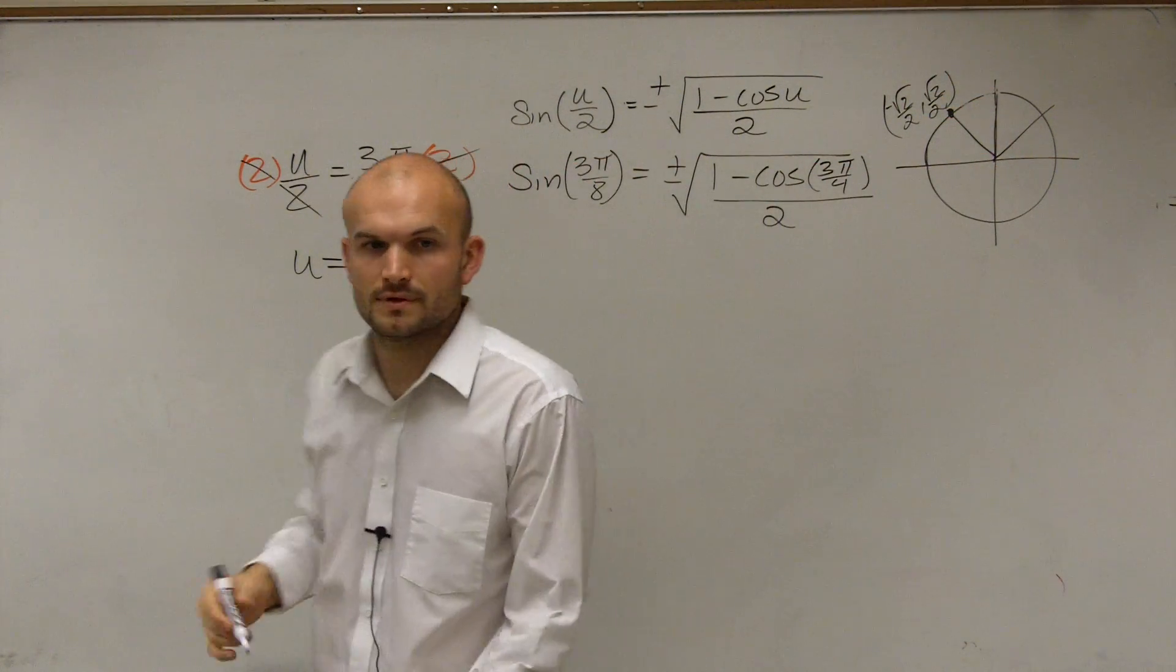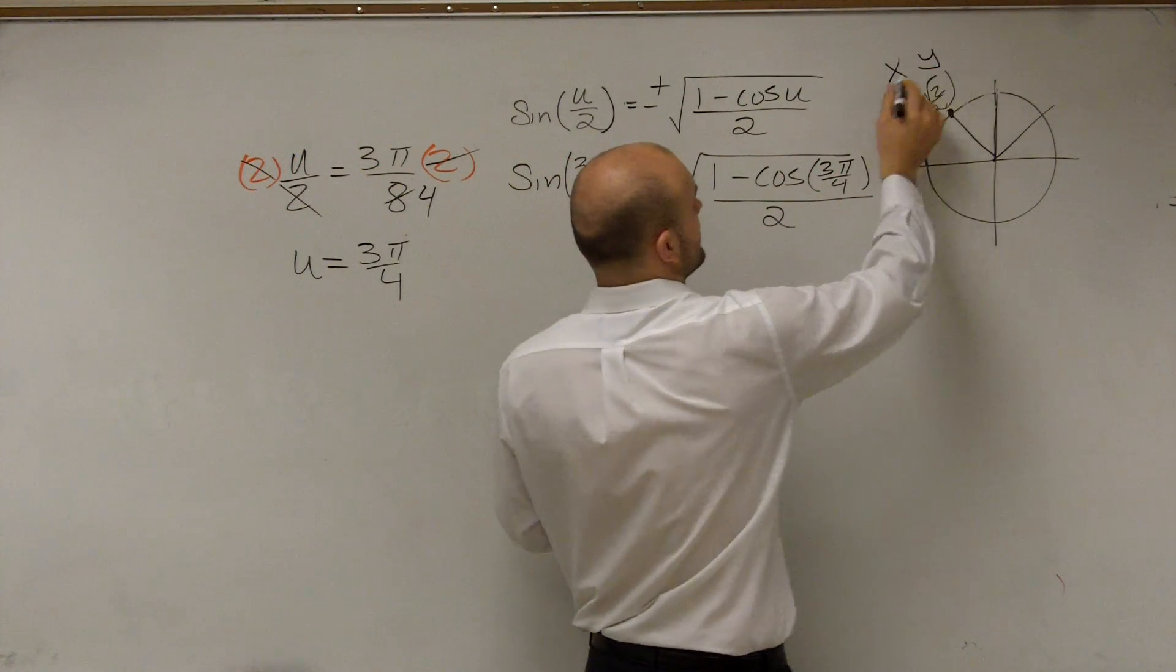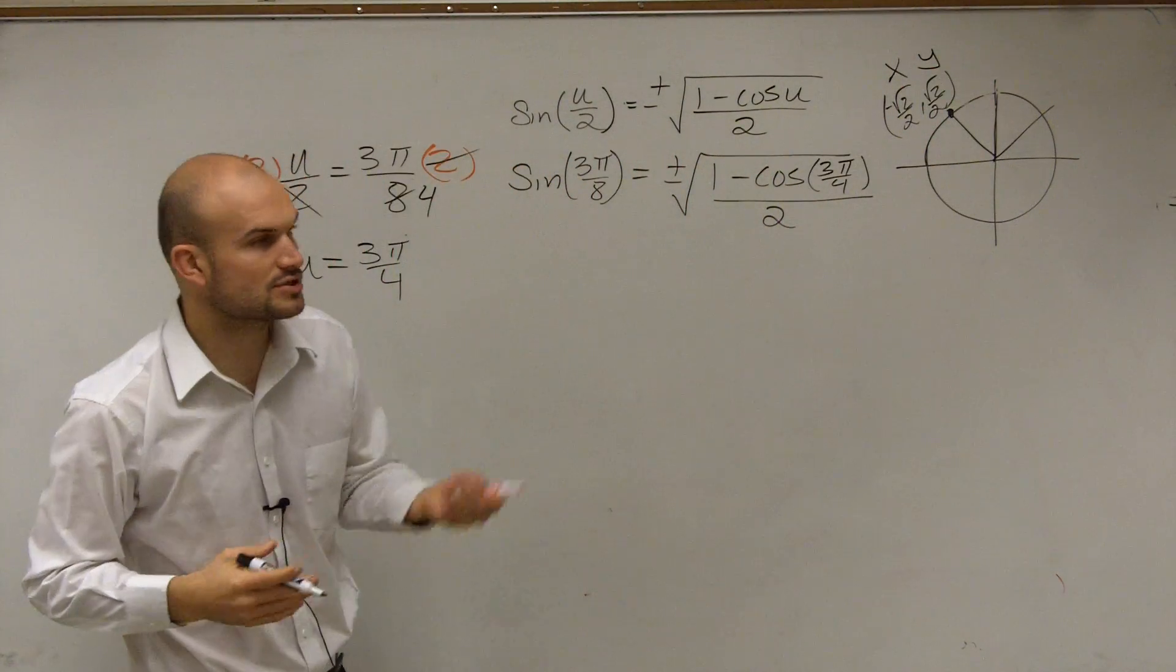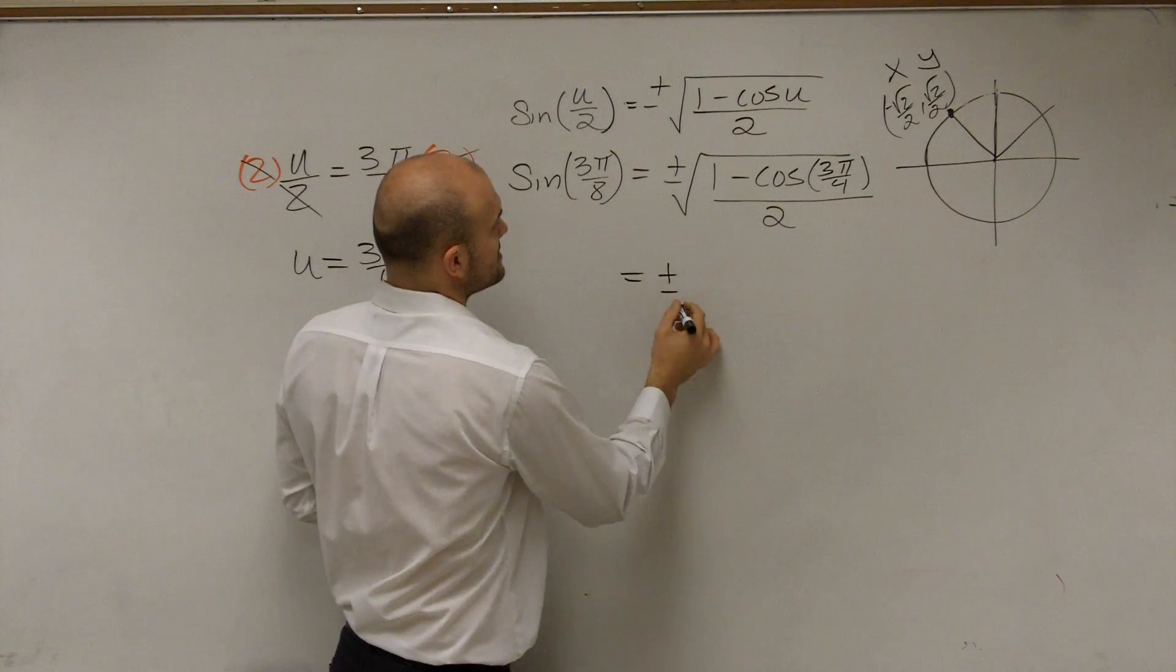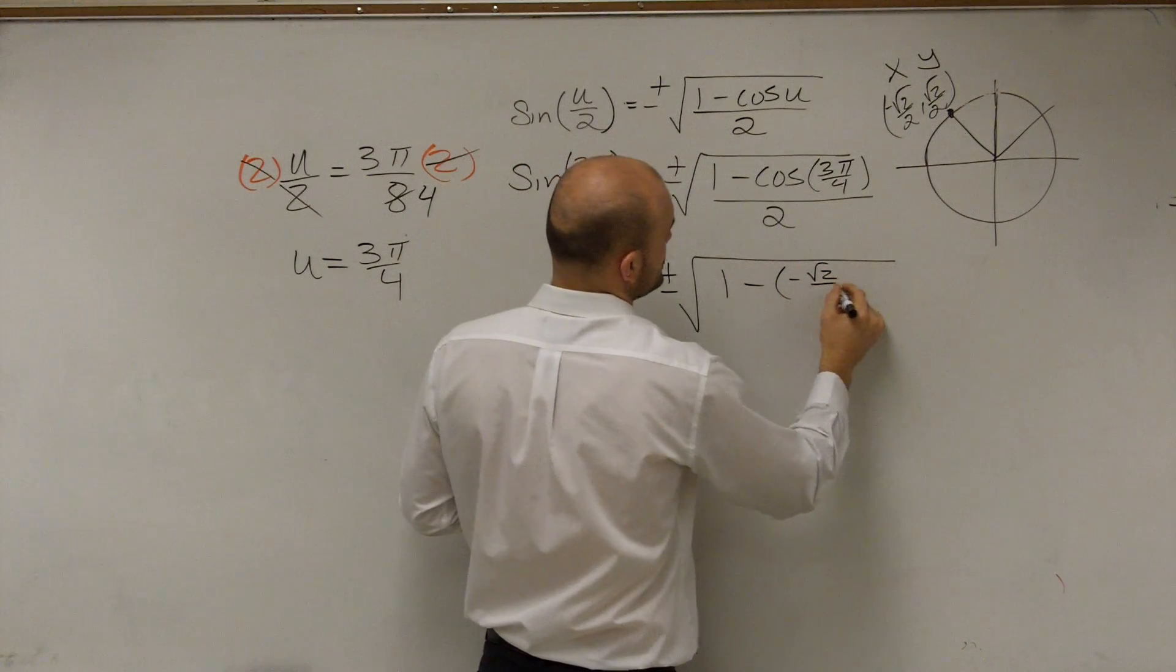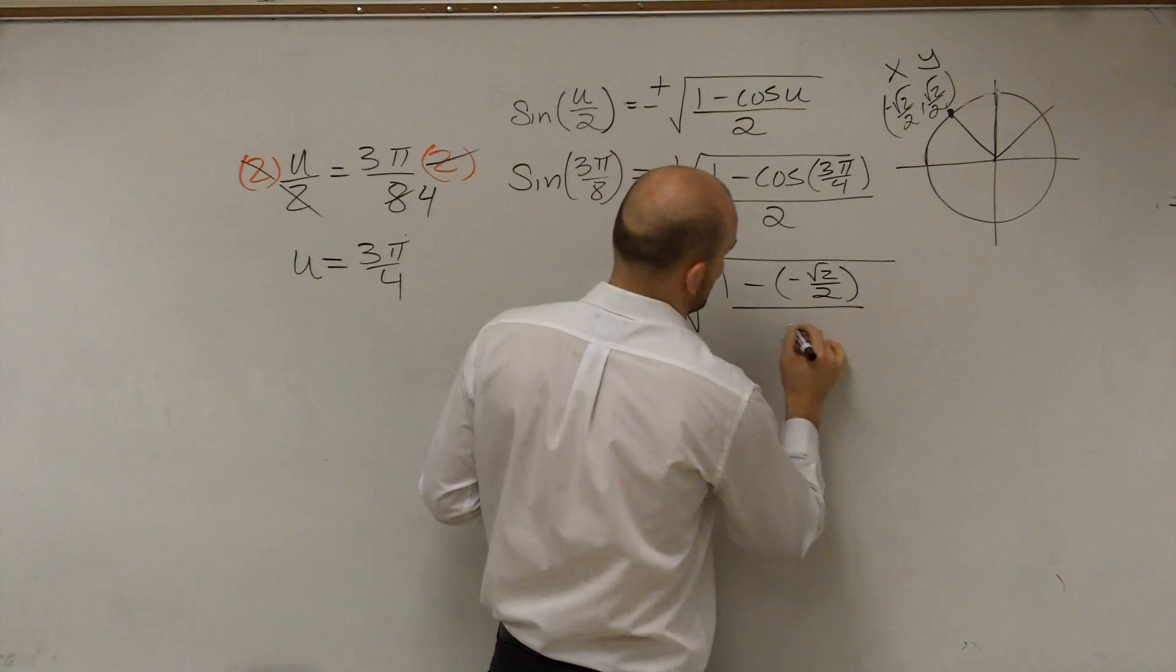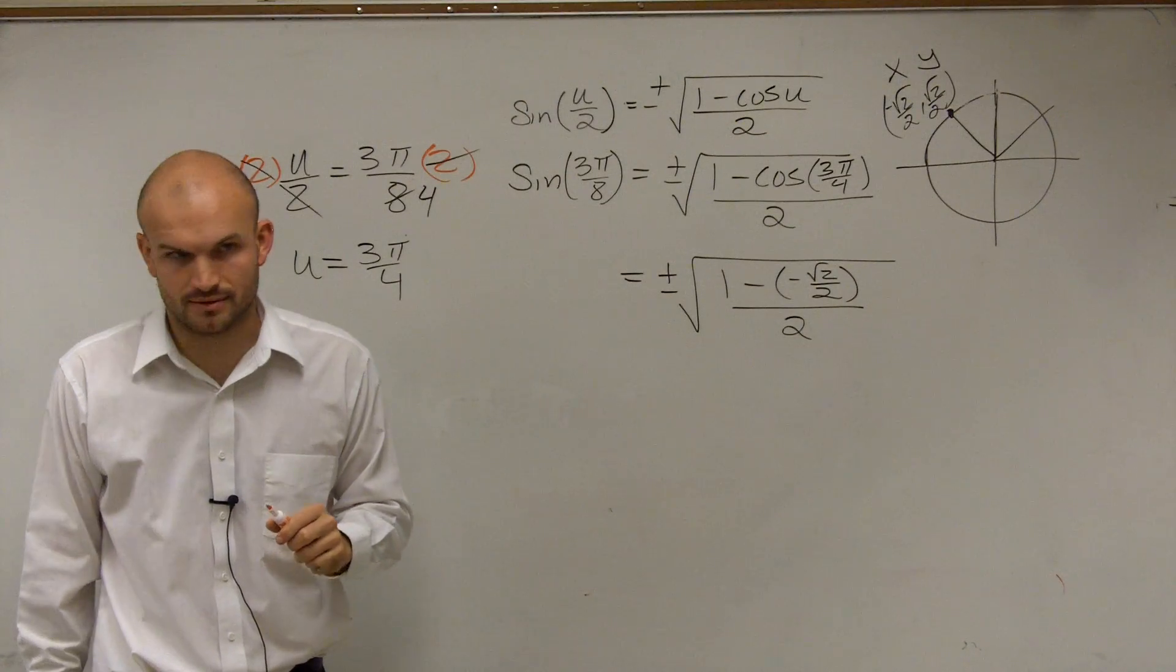So therefore, you can say the cosine, which is dealing with your x-coordinate, is going to be negative square root of 2 over 2. So let's go ahead and plug that in. So we have plus or minus the square root of 1 minus negative square root of 2 over 2 divided by 2. Is everybody kind of following me so far with what I've done?